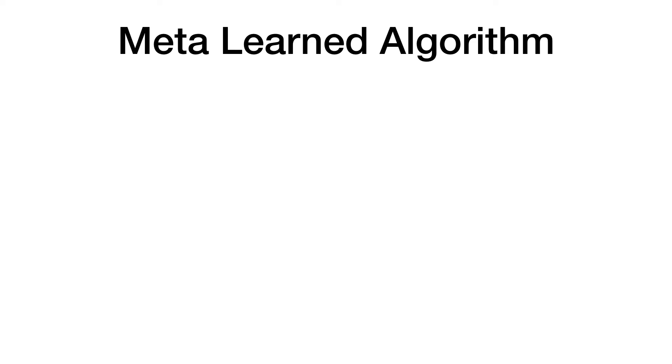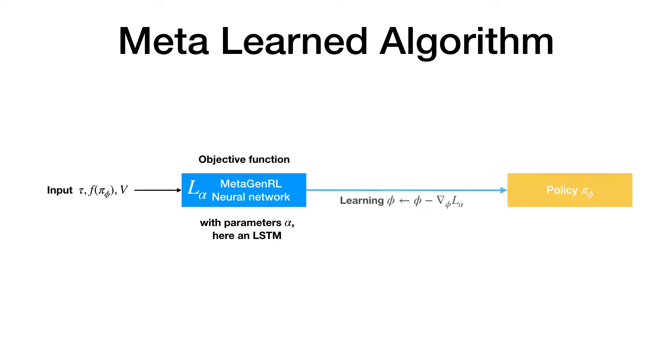In this work, we represent our learning algorithm similar to human-engineered variants. We define an objective function L parameterized by alpha that produces a loss. Some of the inputs depend on the policy parameters, such as the predicted action distribution or the hidden state. This allows us to learn the policy using this objective function by backpropagation.